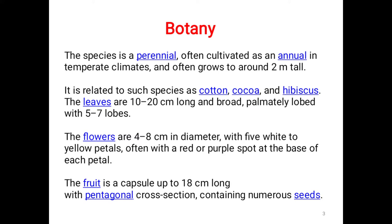The species is perennial, often cultivated as an annual in temperate climates, and often grows to around 2 meters tall. It is related to such species as cotton, cocoa, and hibiscus. The leaves are 10 to 20 cm long and broad, palmately lobed with 5-7 lobes. The flowers are 4 to 8 cm in diameter with 5 white to yellow petals, often with a red or purple spot at the base of each petal.